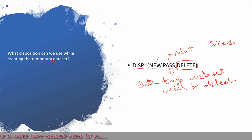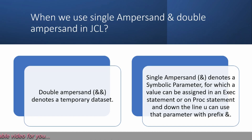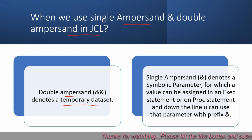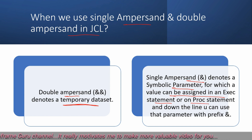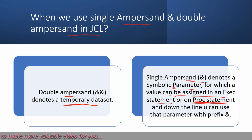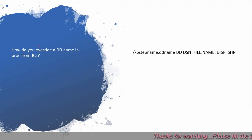Next question: when do we use single ampersand and double ampersand in JCL? Double ampersand denotes a temporary dataset, but a single ampersand denotes a symbolic parameter for which a value can be assigned in an EXEC statement or on the PROC statement, and used further with that prefix.